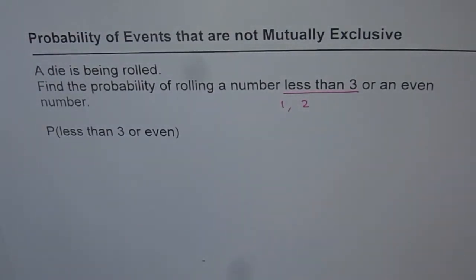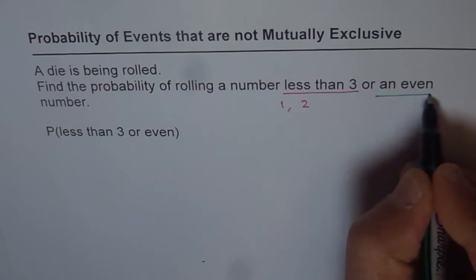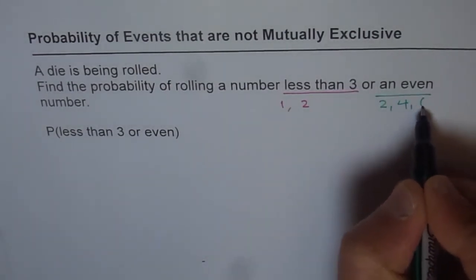Now the second one is probability of rolling an even number. So what are even numbers? Even numbers are 2, 4 and 6.